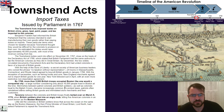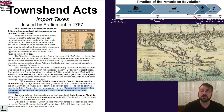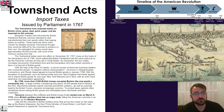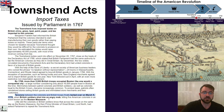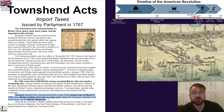To protest taxes, Patriots often vandalized stores that sold British goods and intimidated store merchants and their customers. Tension between the colonists and British troops finally boiled over on March 5th, 1770, when British soldiers shot into an angry mob, killing five American colonists in an event known as the Boston Massacre.